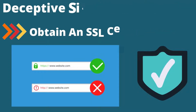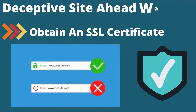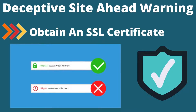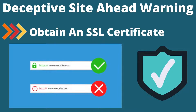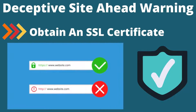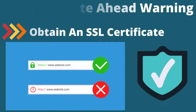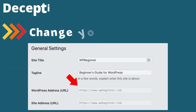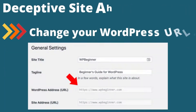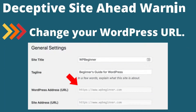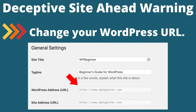Step 7: Obtain an SSL certificate. Once your certificate is ready, you will still need to configure it before you can fix the deceptive site ahead warning. Step 8: Change your WordPress URL. To do this, login to your WordPress dashboard and go to the Settings, General tab.